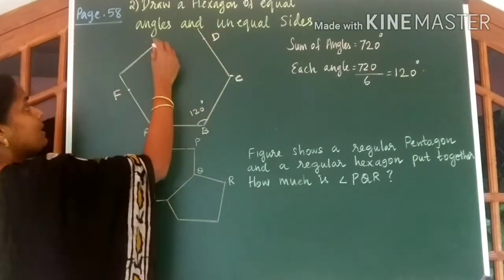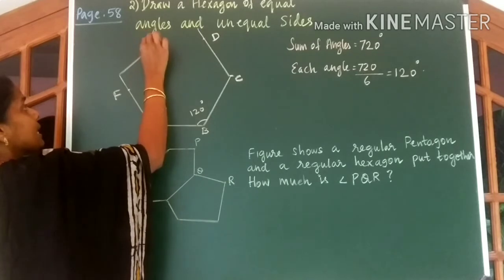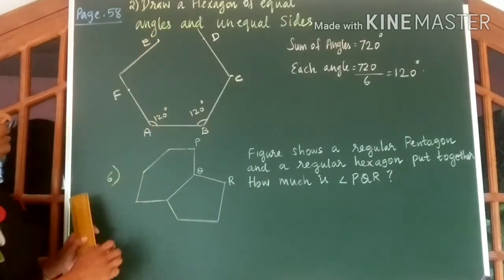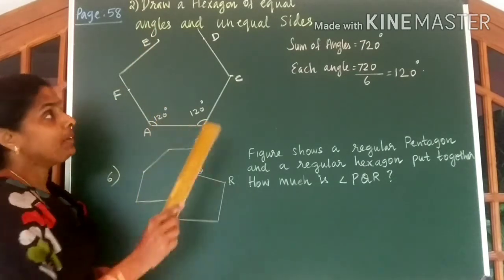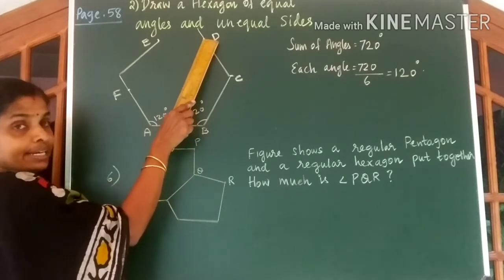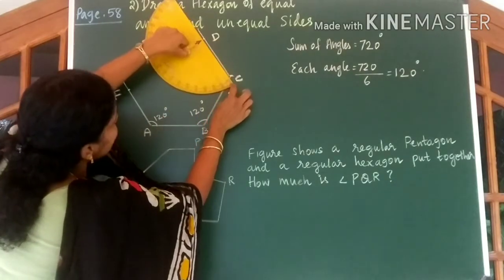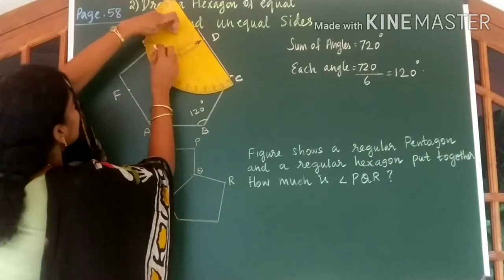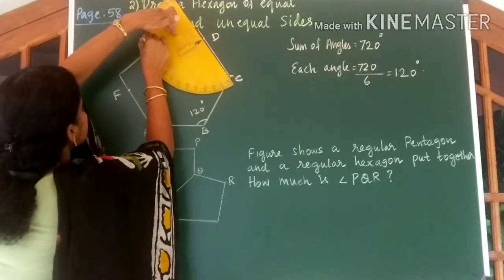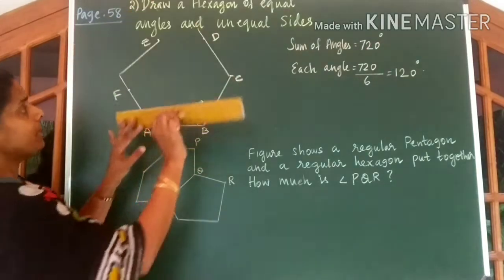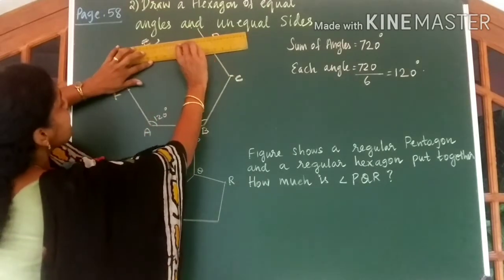Take a point D over here and mark a point E here. Now measure 120 degrees at this point D. And measure 120 degrees. So 120 degrees is here. Draw in D to this point.